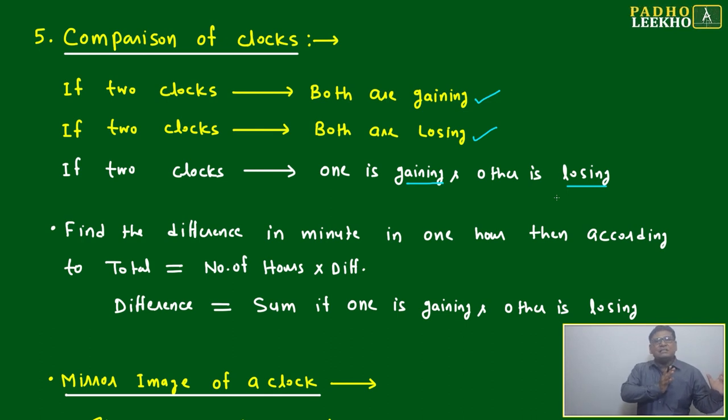Just Monday 8 a.m., one watch is showing 7 hours 50 minutes at 8 a.m., 10 minutes slow.